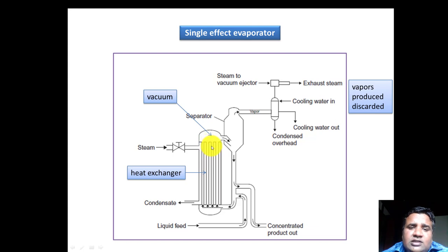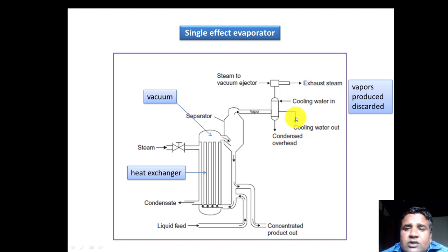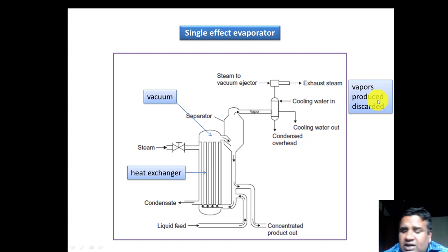The steam circulates and as it loses temperature it condenses; condensate is collected from the bottom. From the bottom we supply the liquid raw material, and upon heating it becomes a mixture at high temperature. In the separator the vapor is removed, and from the bottom of the separator we collect the concentrated product. When the vapor is discarded and not reused, that type of evaporator is known as a single effect evaporator.